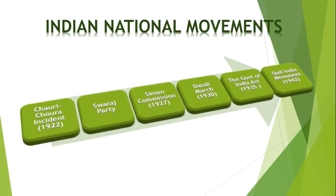Next is the Swaraj Party. Gandhiji decided to call off the agitation, causing frustration among many people like Motilal Nehru, C.R. Das, and N.C. Kelkar. They organized the Swaraj Party as a separate party, and the foundation of the Swaraj Party was laid on January 1, 1923, as the Congress-Khilafat Swaraj Party.